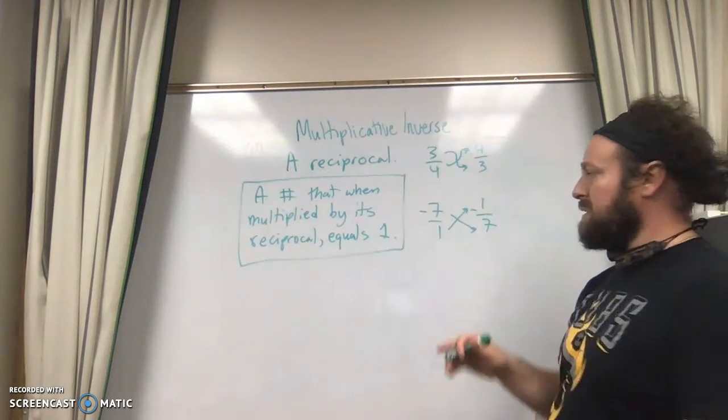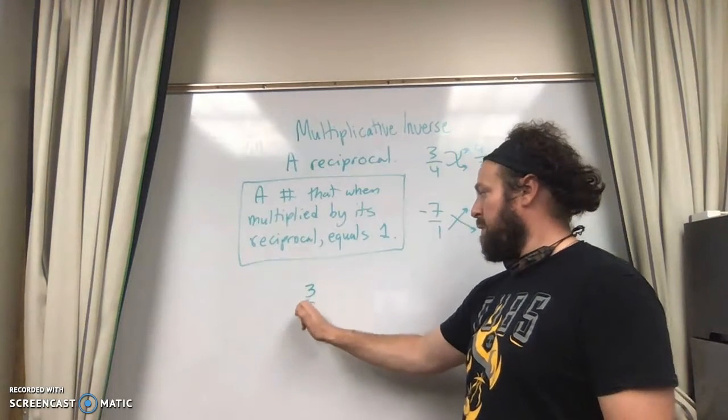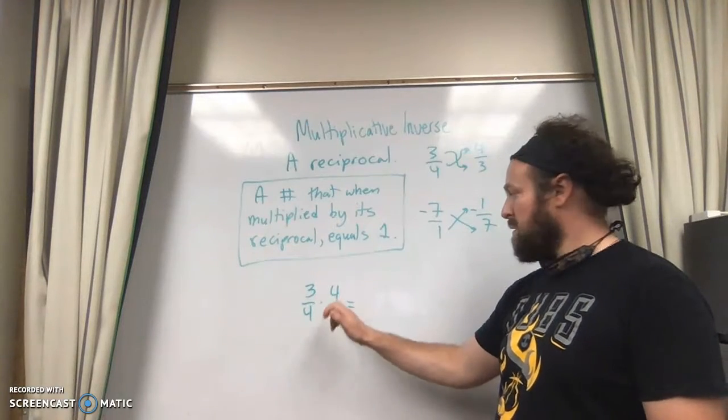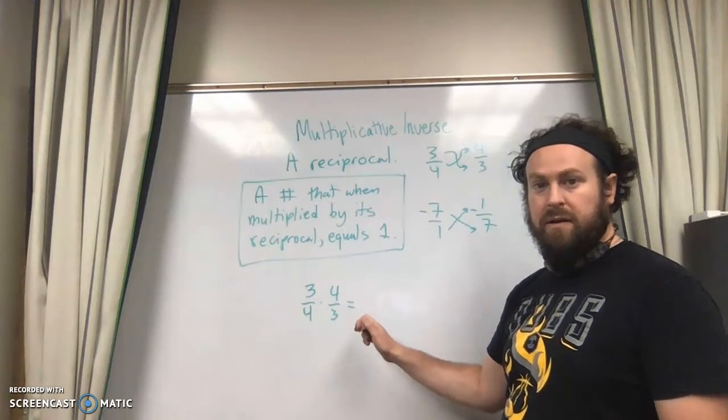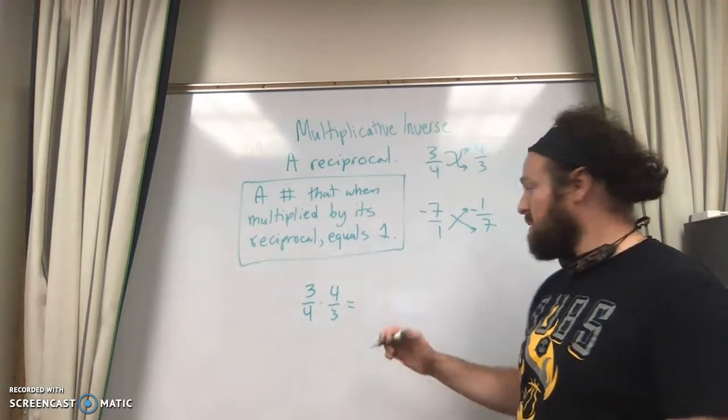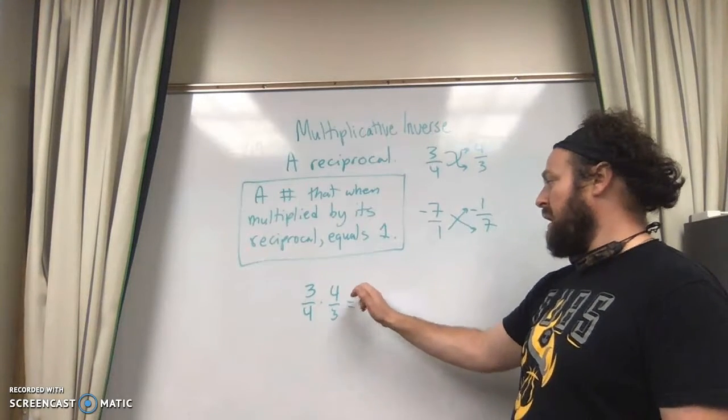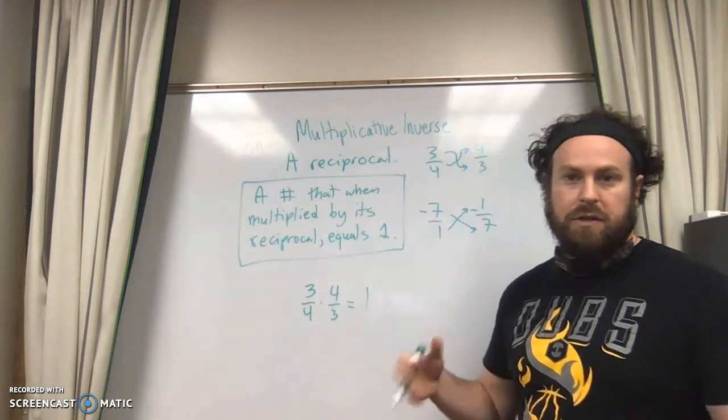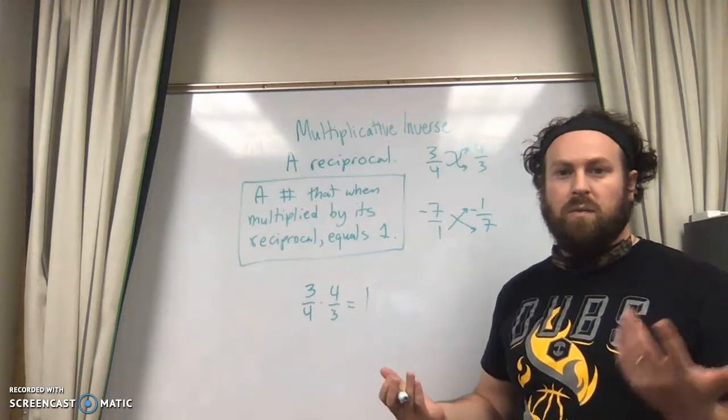Let's just start off with our two examples here. 3 over 4 times 4 over 3. Do you see our pairs of 1s? 4 over 4, 3 over 3. Just like we did when we were simplifying exponents. That equals either 1 right away, or you could say 12 over 12, which is still a pair of 1s, 1.